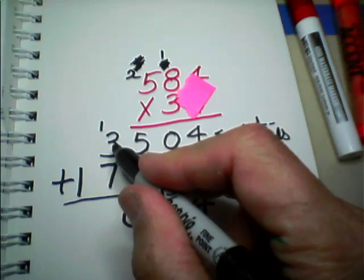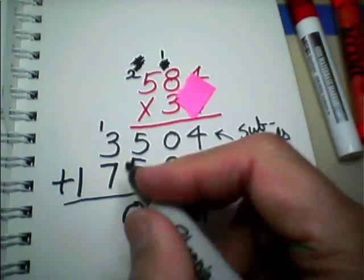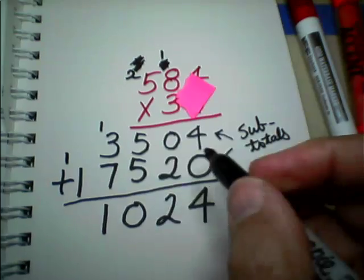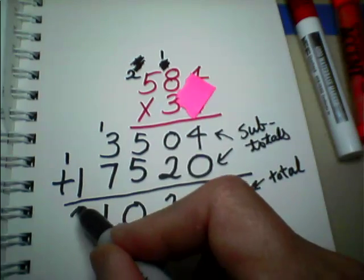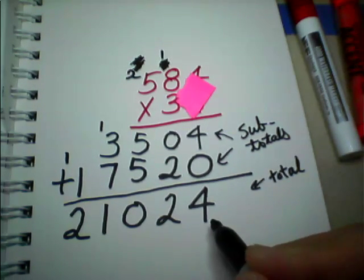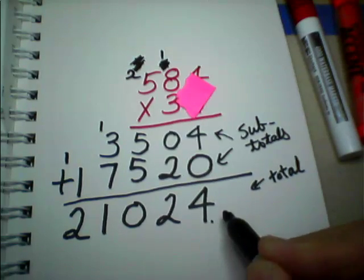So, 1 plus 3 is 4. And 4 plus 7 is 11. We write down the 1 and carry the 1. And then 1 plus 1 is 2. And let's throw some commas in here. Count out from the decimal point, which is not, you don't see it, but it's there.